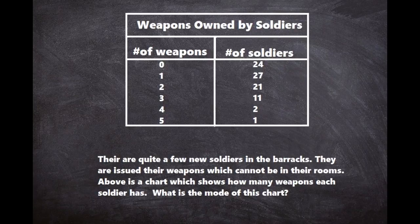So if we ask what's the mode, we want to know what value occurred the most. Out of this set, 27 soldiers is the highest number that had the same amount. So if we made a bar graph, the value that would be the highest bar would be the one value, because it would have 27 participants — 27 people had one weapon — which is higher than, say, the 11 that had three. So the value that occurs the most in this set is one, therefore the mode is one.